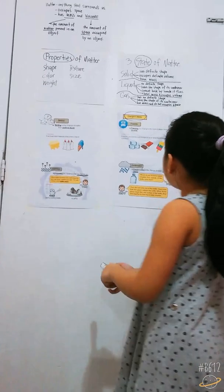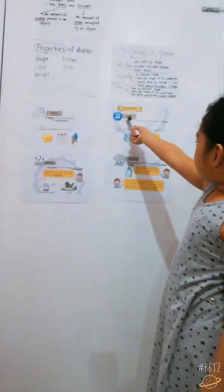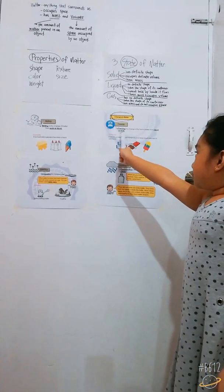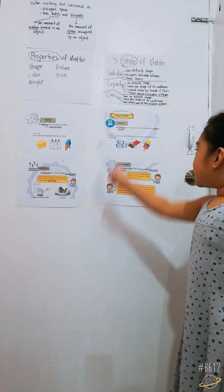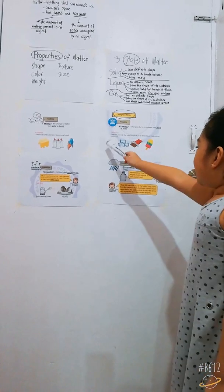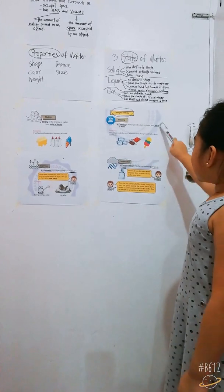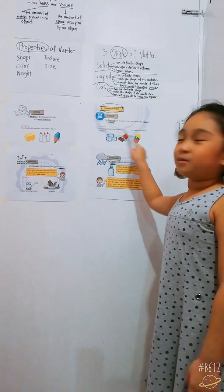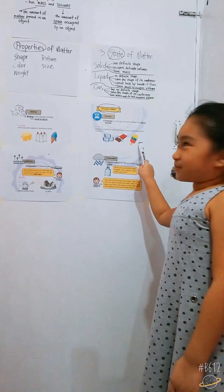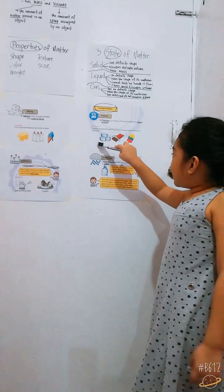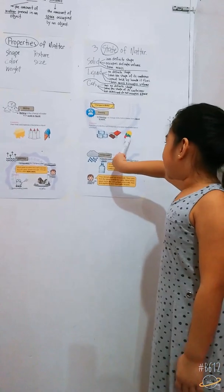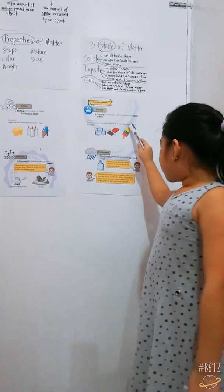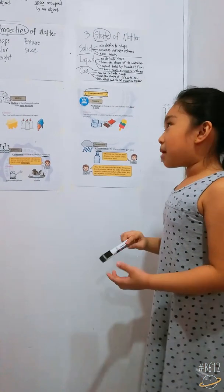Freezing is liquid to solid. The best examples are ice cubes, chocolate, ice candy, and lollipop.